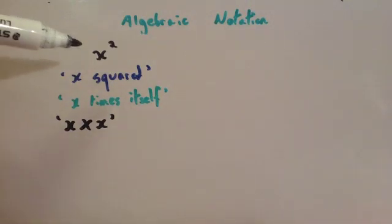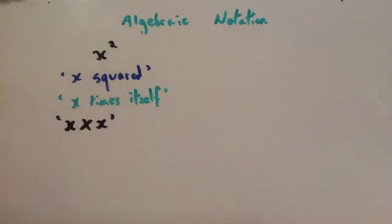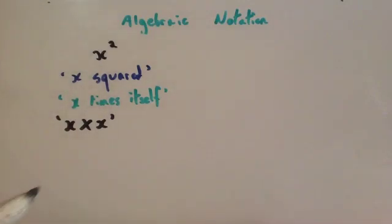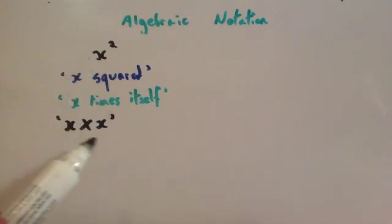This time I've written x with a superscript 2. You should recognize this squared symbol. If you write x squared, it's read as x squared. Some people say x times itself to figure out how to work it out when they know the number. For instance, if x was 5, it would be 5 squared, so you do 5 times 5. Or x times x because it's x times itself. But normally you would say x squared.